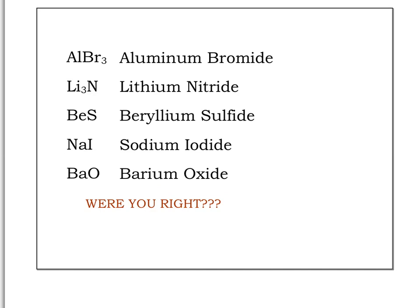The first answer is aluminum bromide. The second one is tricky — did you say nitrogide? Hopefully you realized that sounds funny. Instead we say nitride. We can think of it as not wanting more than two syllables for the anion: nitrogide, oxygide, and phosphoride all sound funny, so we say nitride, oxide, and phosphide. The remaining answers are beryllium sulfide, sodium iodide, and barium oxide.